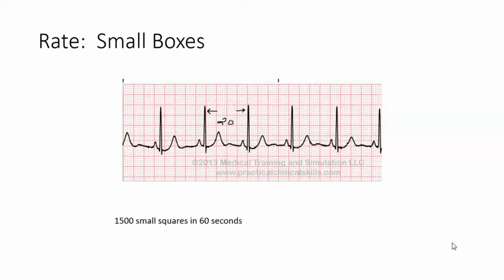There are 1500 small squares in 60 seconds. There's 150 small squares in 6 seconds, multiplying both by 10. So you take 1500 and divide that by the number of small squares between the two R waves and that gives you the heart rate. Again, this is ventricular. You can do the same thing with the P waves for the atrial rate. 1500 divided by 20 equals 75 beats per minute. And that's it.